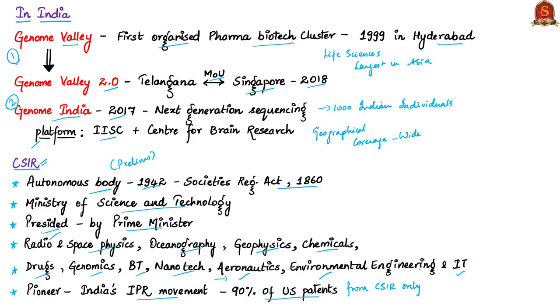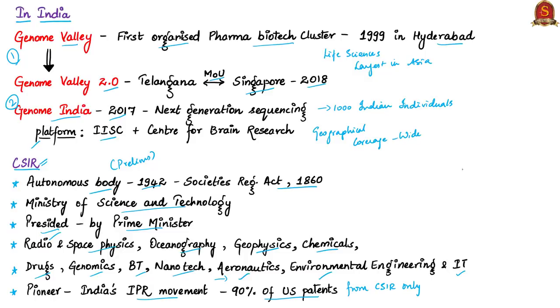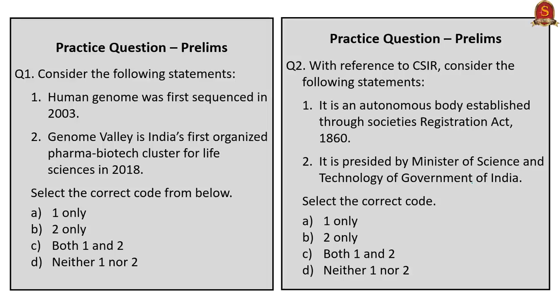With this, we come to the end of this topic. From a prelims preparation point of view, try to know the different human genome projects we have seen and about CSIR. Have a look at the two practice questions; we shall discuss them at the end of the session.